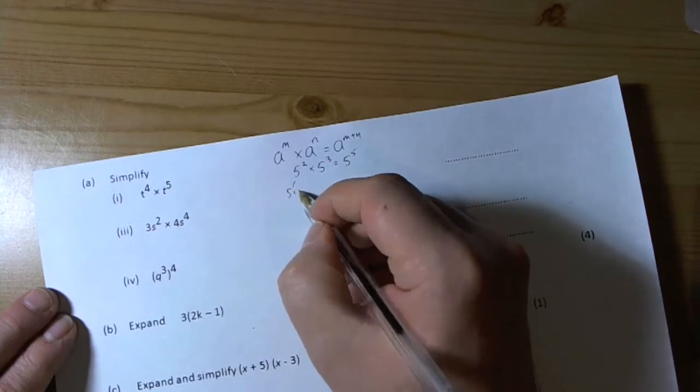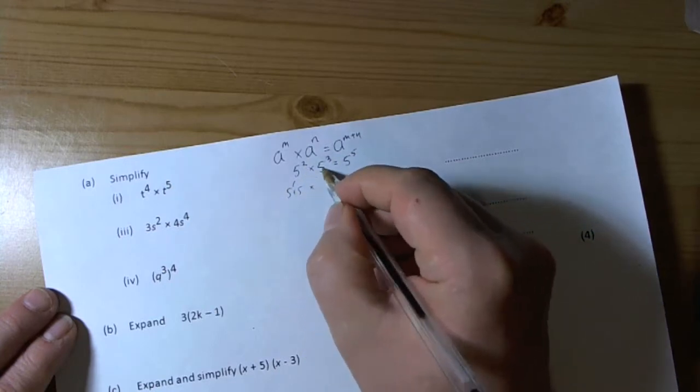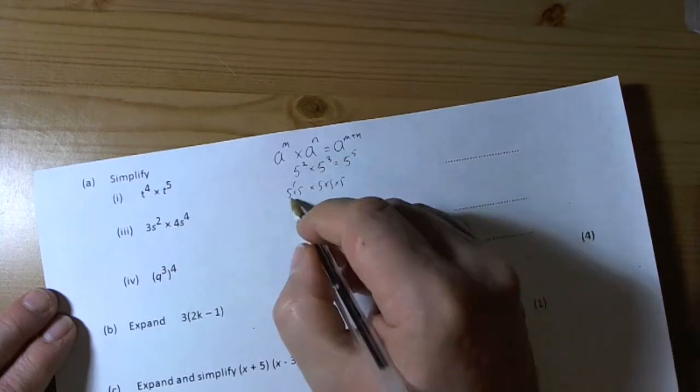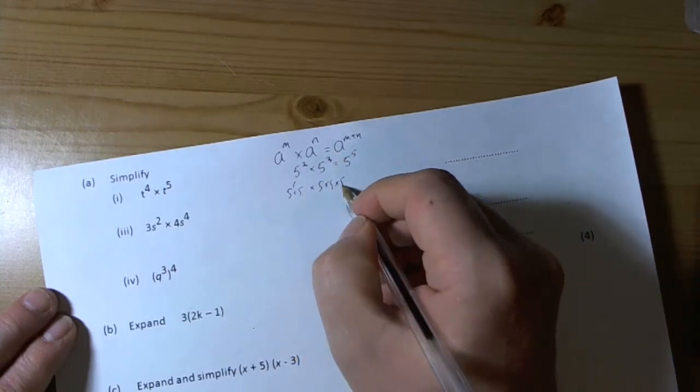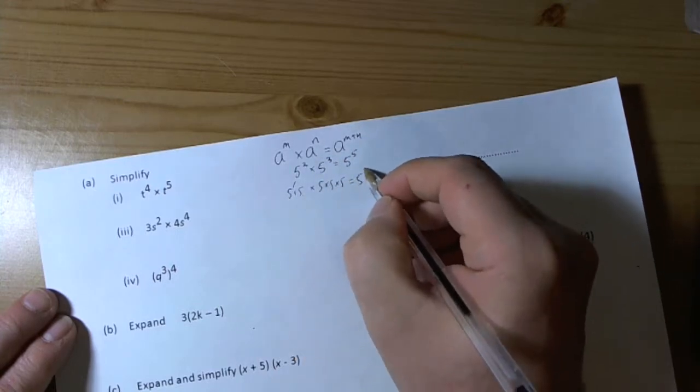It works because 5 times 5 is squared, times 5 times 5 times 5, which is cubed. 1, 2, 3, 4, 5—5 has been multiplied, hence the reason it's 5 to the power of 5.